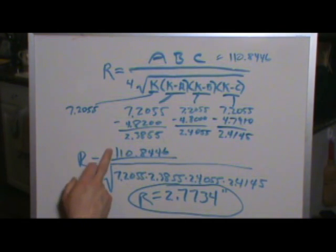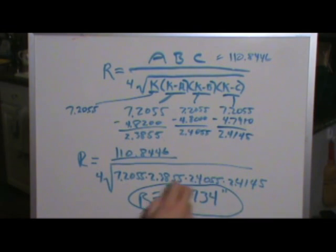So now we've got all the chunks of this equation and we can put it all together. The radius equals 110.8446 divided by the quantity 4 times the square root of k times k minus a times k minus b times k minus c. And if you grab the calculator and work out all that math, we find that the radius of my spherometer R equals 2.7734 inches.